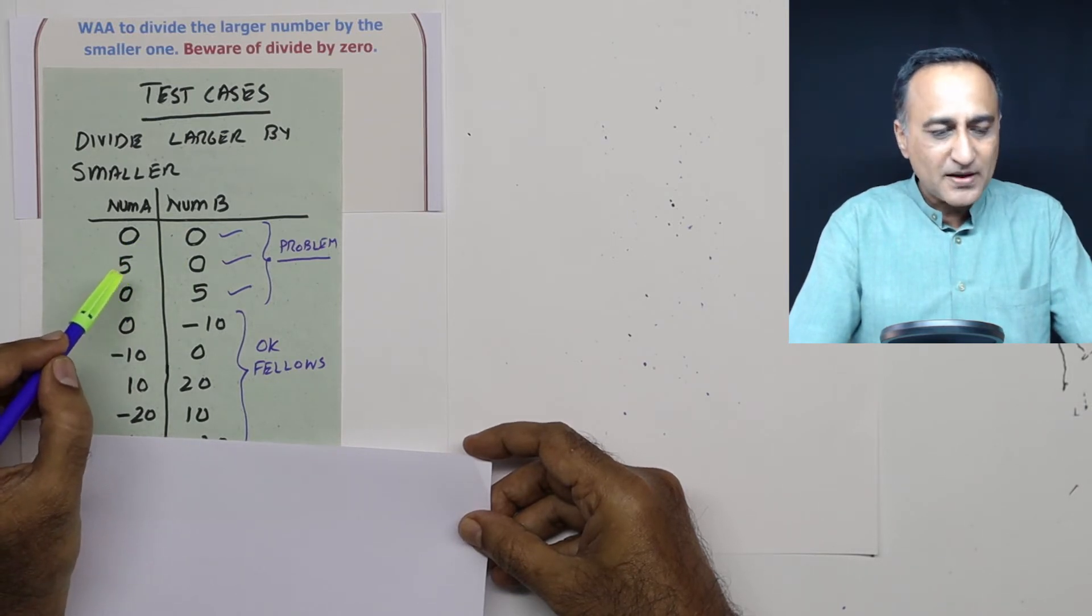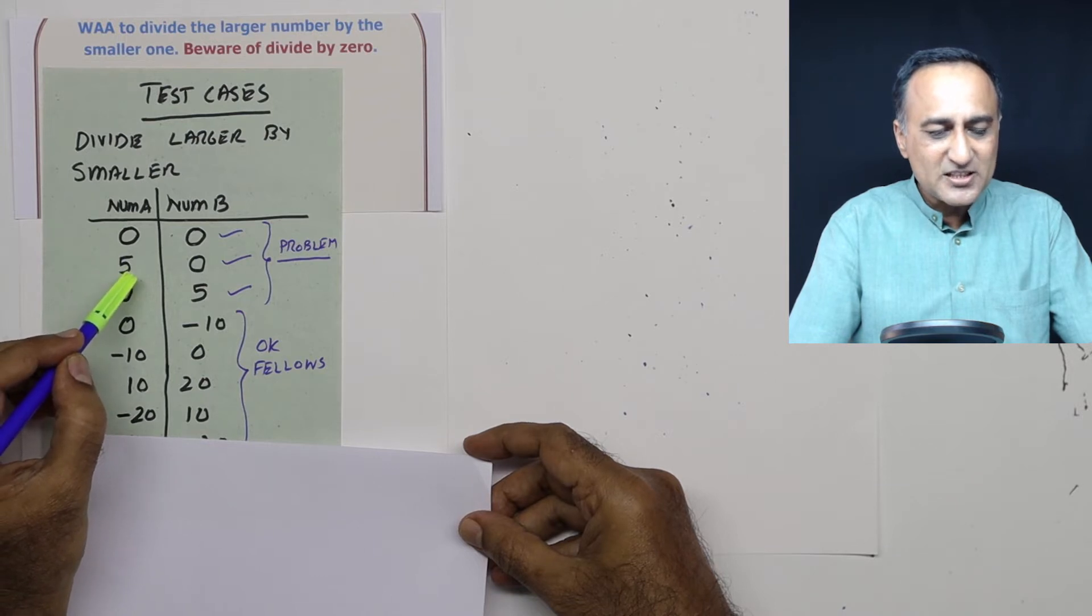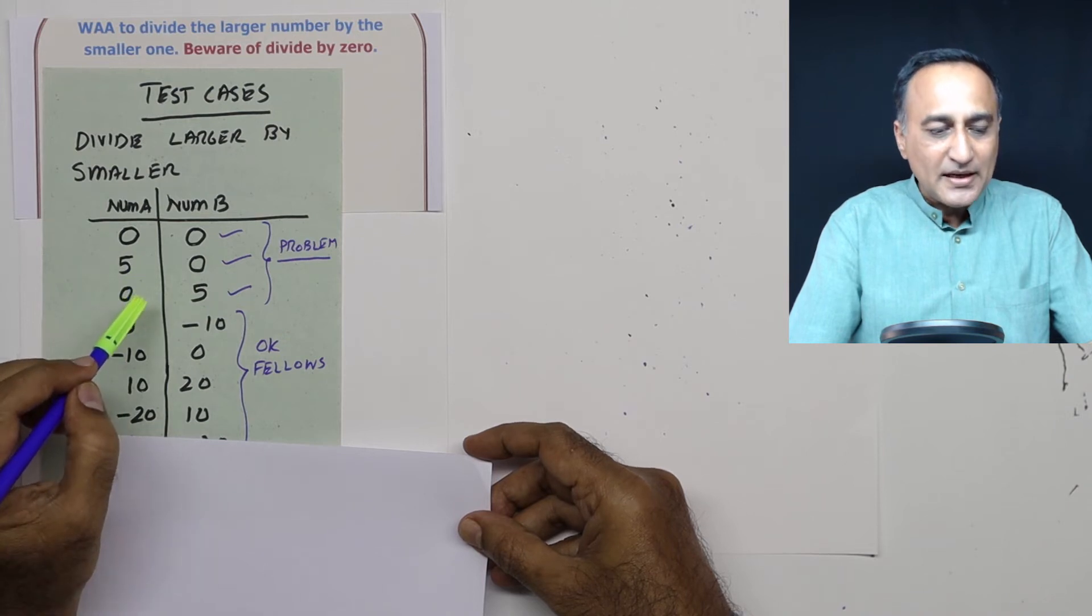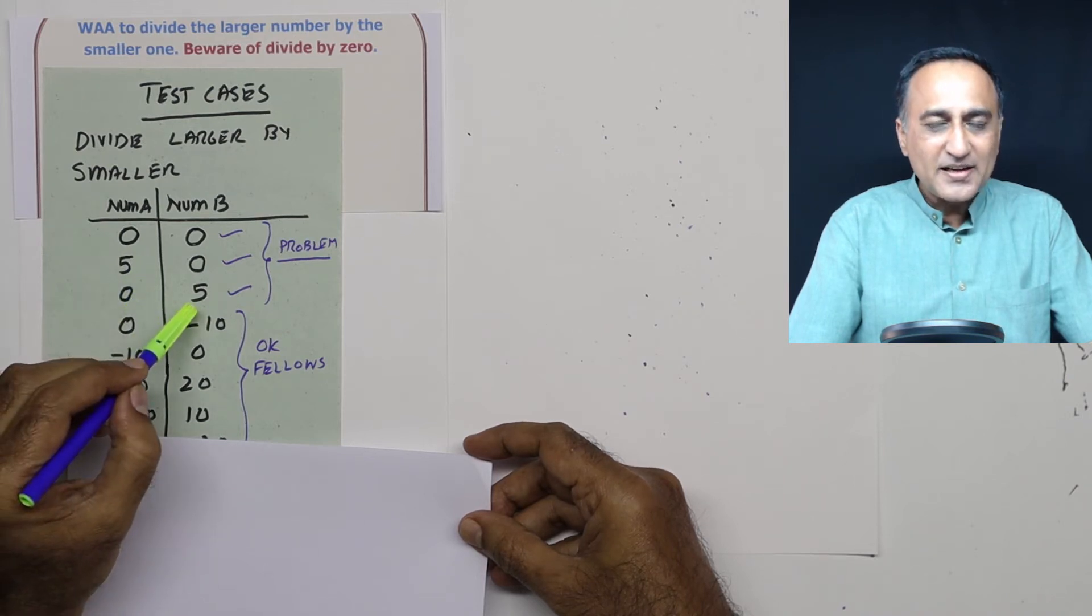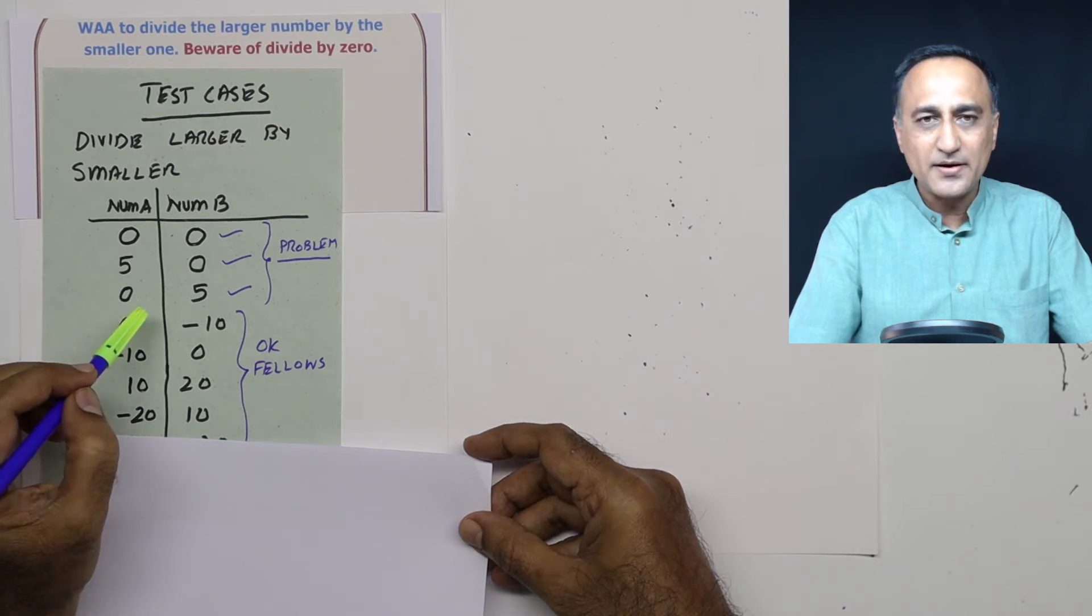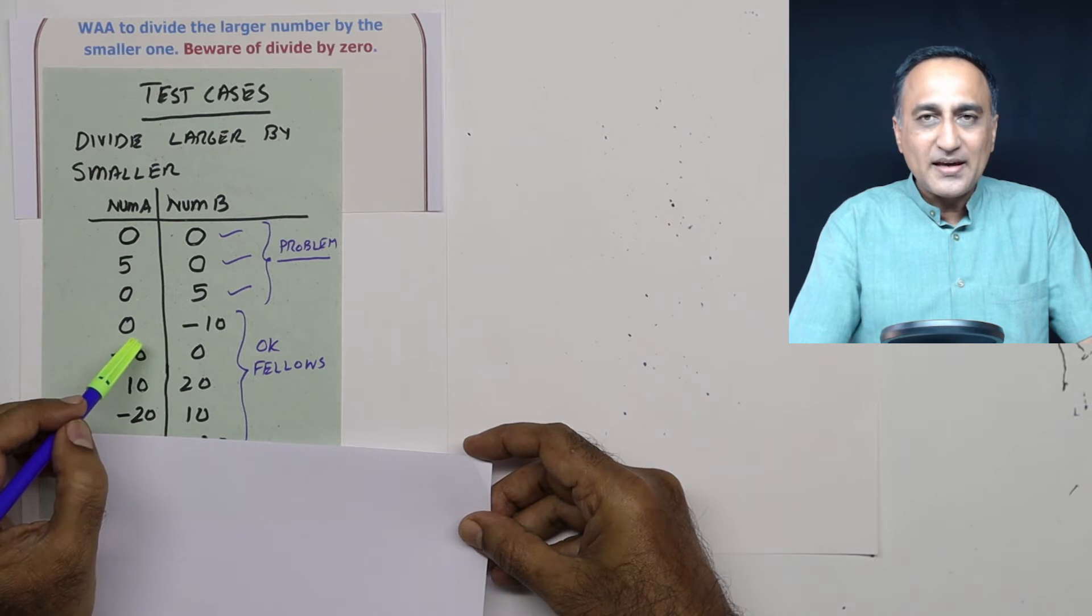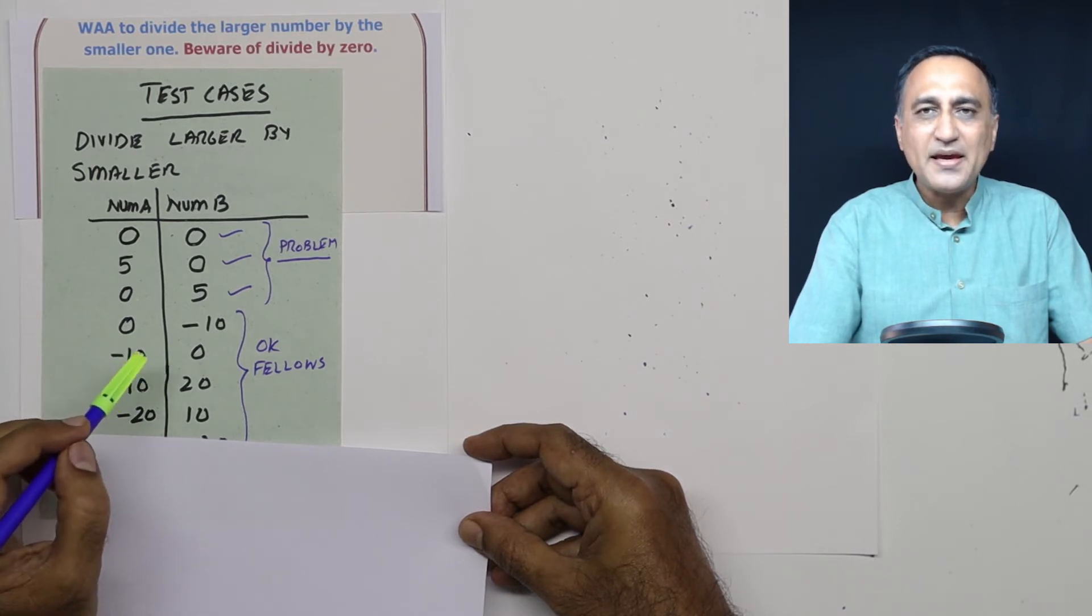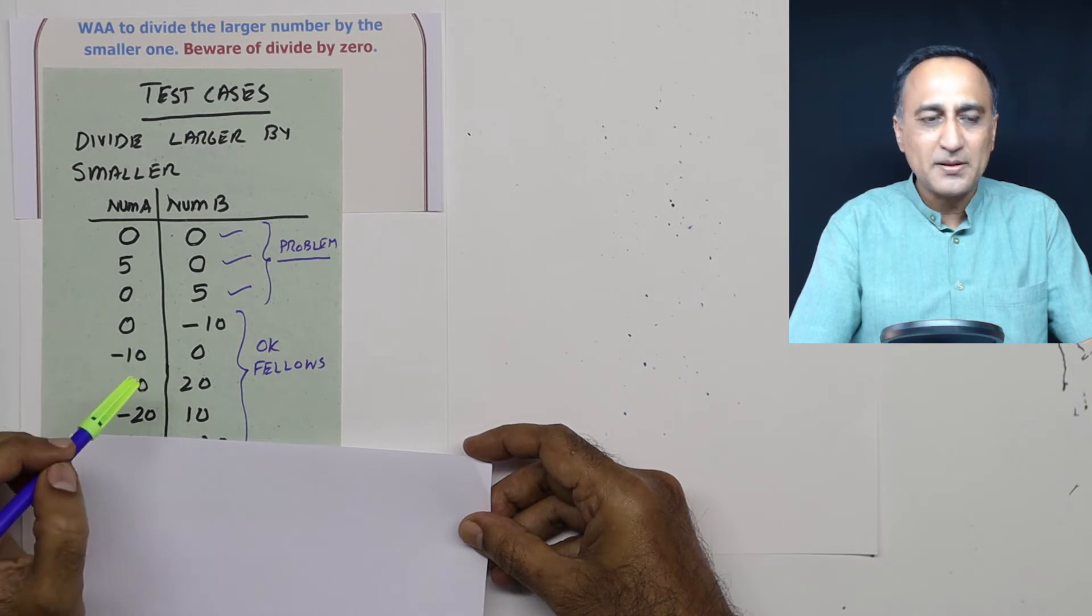Else if number A greater than 0 and number B equal to 0 then divide by 0 error. Else if number B greater than 0 and number A equal to 0 again divide by 0 error. Else if number A greater than number B then divide number A by number B. Else divide number B by number A.